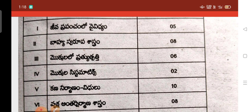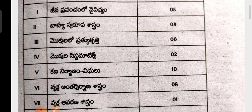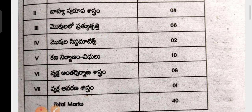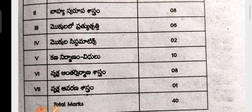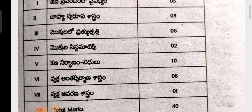The mark distribution is: first unit 5 marks, second 8 marks, third 6 marks, fourth unit 2 marks, fifth 10 marks, sixth 8 marks, and seventh 1 mark. Here you can see the total syllabus of botany overall.